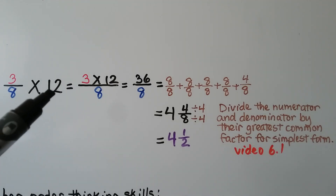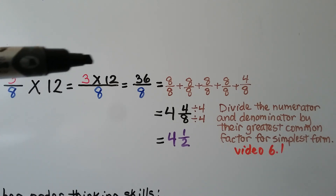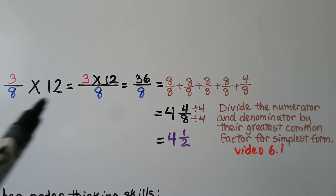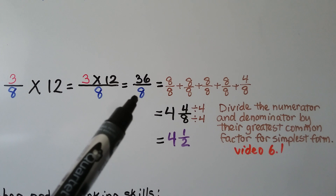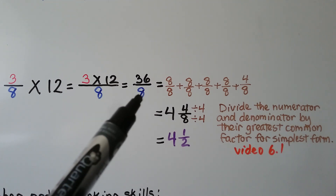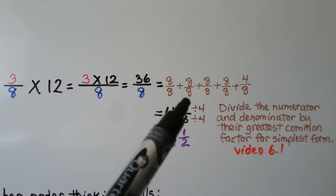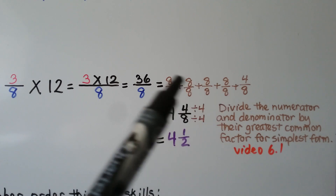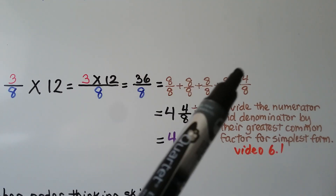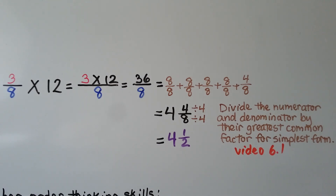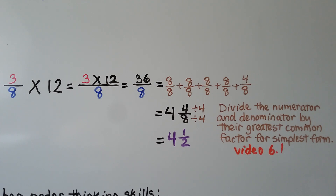Here we have 3 eighths times 12. We multiply 3 times the whole number 12 for the numerator — we get 36. We slide over the given denominator, we have 36 eighths. We can think how many eighths fit into 36, or write them out as 8 eighths as one whole, four times — since 8 times 4 is 32 — leaving 4 eighths left over. We have 4 whole and 4 eighths, which is 4 and 4 eighths. Dividing by the greatest common factor of 4, we get 4 and 1 half.